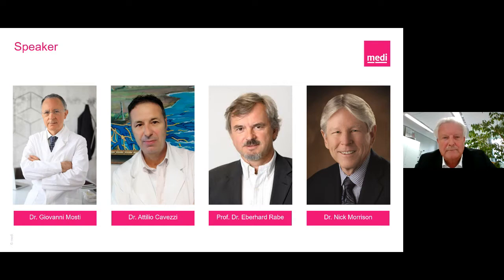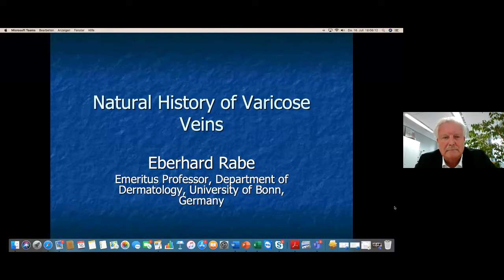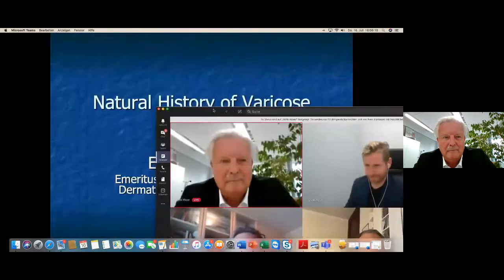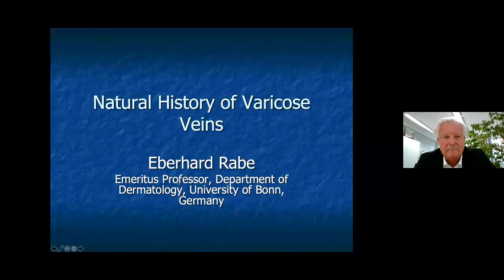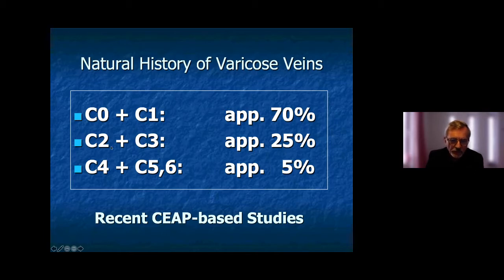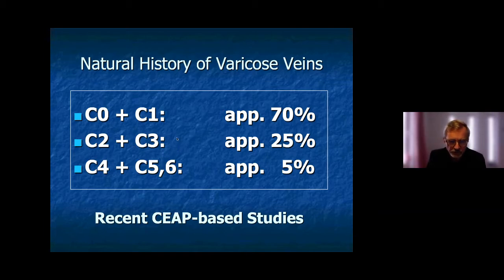My topic today is the Natural History of Varicose Veins. Looking at CEAP-based studies from recent years, we can see that varicose veins and chronic venous disease are very frequent in the general population. Looking at C2 and C3 patients — varicose veins with and without edema — approximately 25% of the worldwide population has C2 and C3 stages, and approximately 5% have severe chronic venous insufficiency.